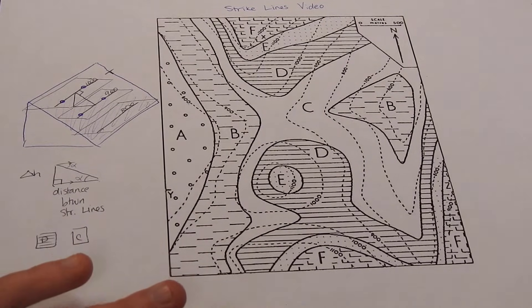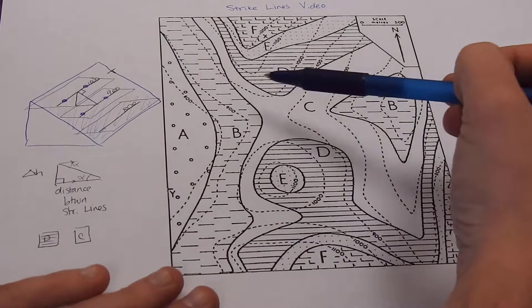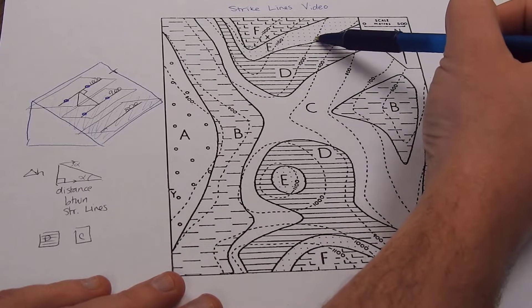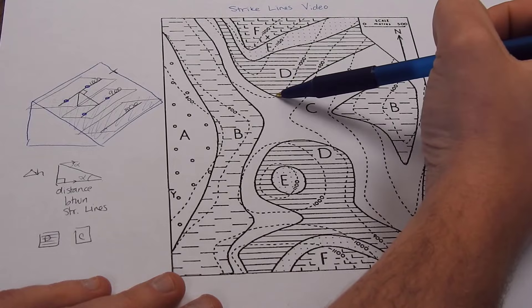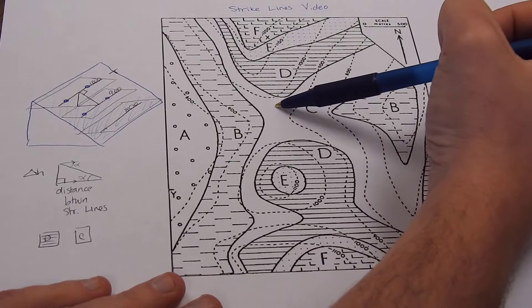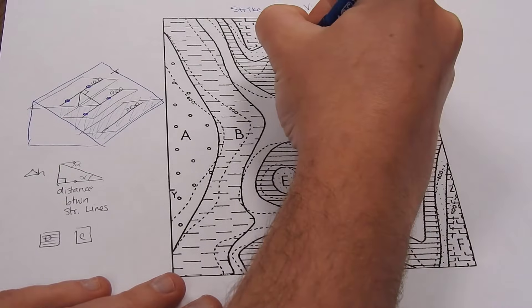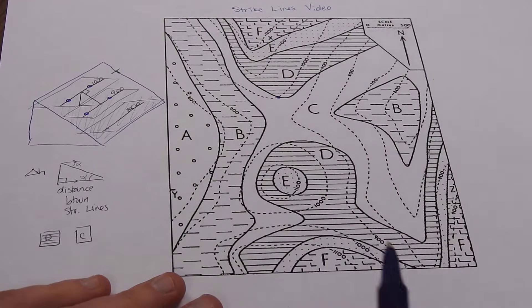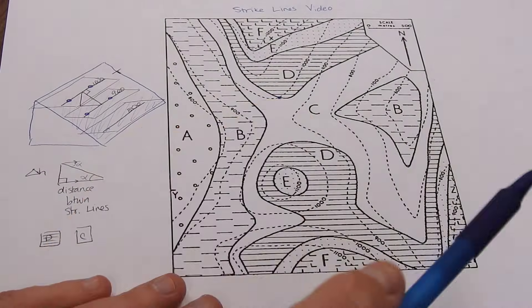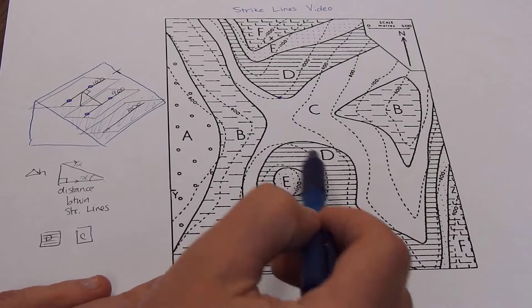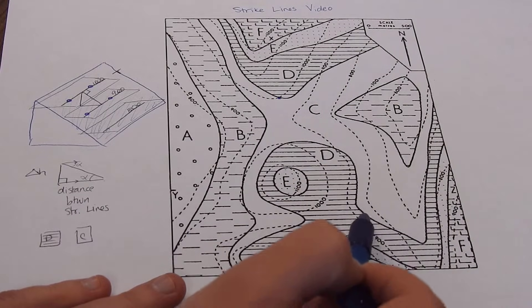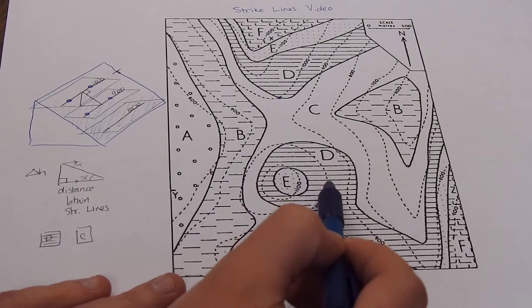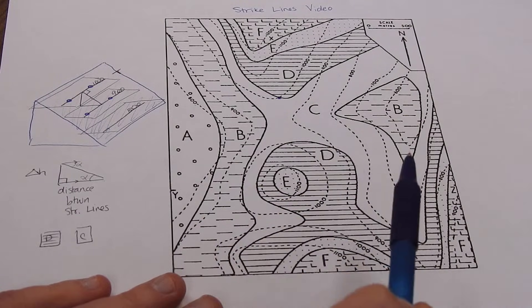So let's find the contour interval of 1,000. So here's a 1,000. We're going to march along that line until we find the intersection or the contact between unit D and unit C. And put a point. And then we can keep looking. So over here, here's the contact. Right here, we cross that 1,000 dashed line again.